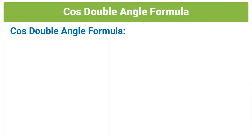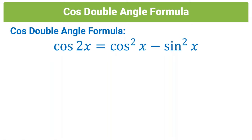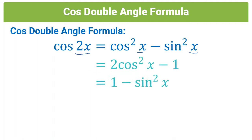Now we go on to the cos double angle formula. It's slightly different from the sine double angle formula but still does the same thing — on the left we have 2x and on the right we have single x's. With the cos double angle formula, there are actually three formulas, and it can become a nightmare if you don't learn in which scenarios to apply each one.